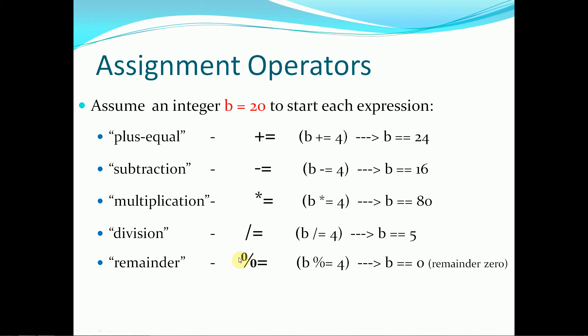And again, it applies to the modulus operator. So 20 divided by 4 gives us 0 remainder. So 0 would end up being stored inside the variable b.